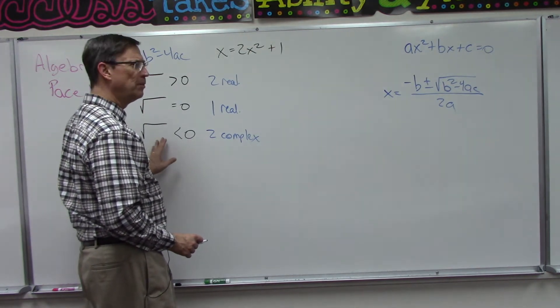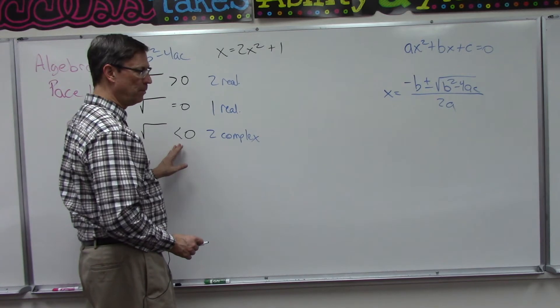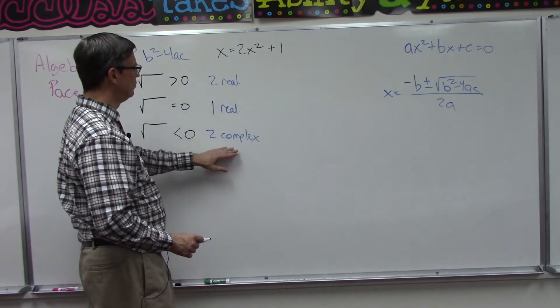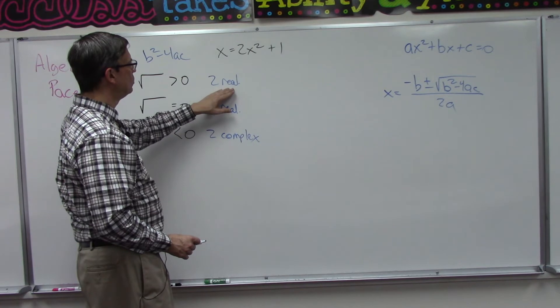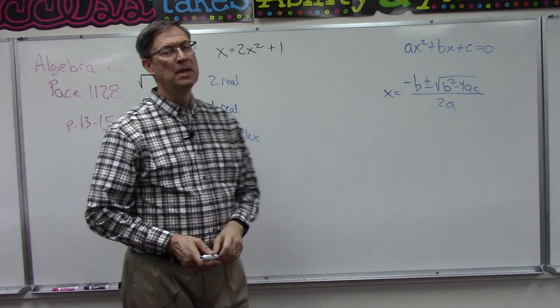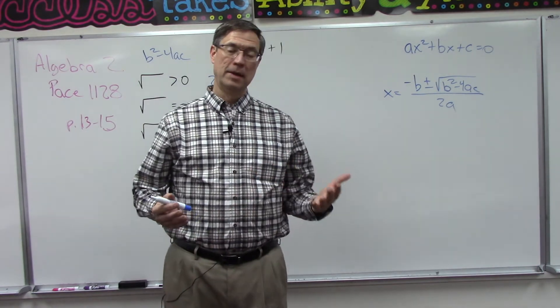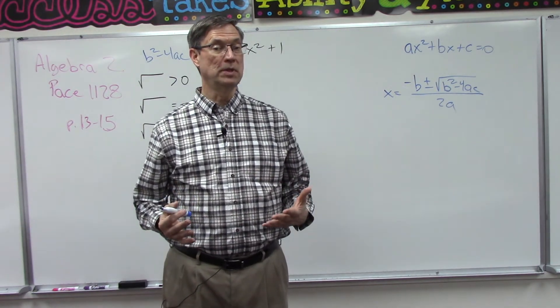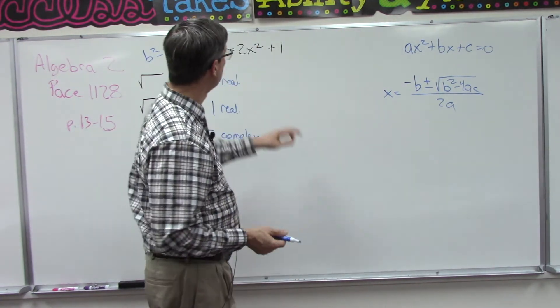So the square root of a negative number becomes a complex number because we have i in the solution. So there's only three possibilities: we either get two real number solutions, one real number solution, or two complex.